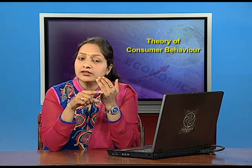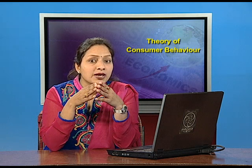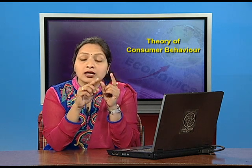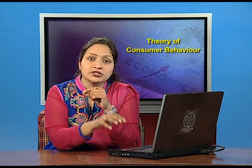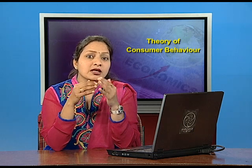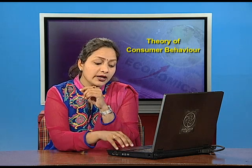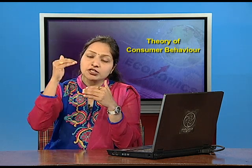Fourth assumption is that utility is ordinal. Utility means want-satisfying power. Professor Alfred Marshall in his utility concept stated that we can measure our satisfaction, which was wrong. Practically we can never quantify our satisfaction. What we can do is give ranking to our preferences — we can state that we like this one more than that one. Hicks and Allen focused on the fact that we can only give ordering and preferences to our satisfaction, like first preference, second preference, and third preference.